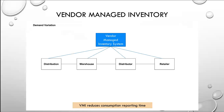What VMI does is provide an immediate reporting of consumption of the product, because as soon as the vendor gets the consumption data, it's shared with all entities so that all entities will understand. When it's shared, it also comes with a demand from the vendor to meet certain demand.